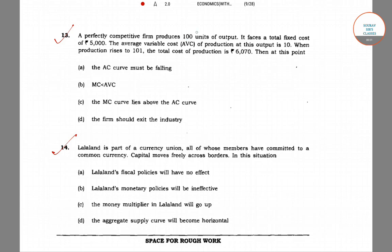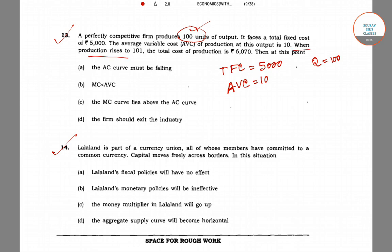A perfectly competitive firm produces 100 units of output. It faces a total fixed cost (TFC) of 5000, and the average variable cost (AVC) at this output is 10. When production rises to 101 units, the total cost of production becomes 6070. So when Q becomes 101, TC becomes 6070.